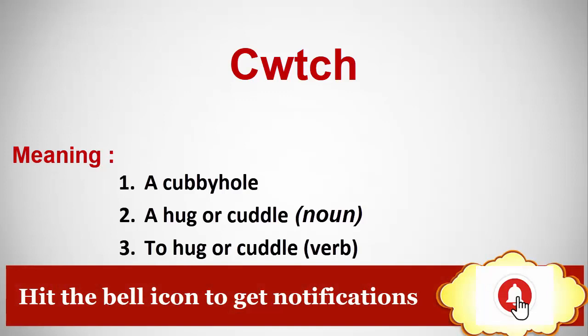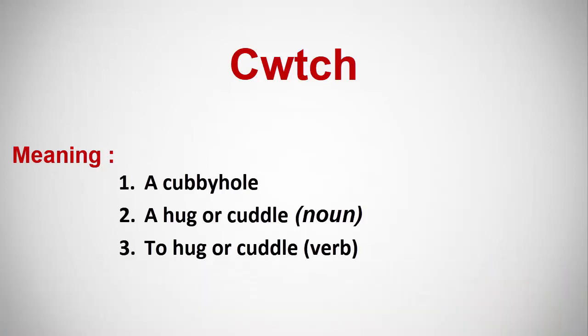Jab hum is ko ek hug aur cuddle ke meaning mein istamal karte hain to yeh ek noun ya verb dono tarah se istamal ho sakta hai. Lekin mein pehle is ka pehla matlab — a kabhi hol — explain karti hoon. A kabhi hol ka matlab yeh hota hai ke ghar ke andar koi ek choti si jagah hoti hai, small si koi corner hoti hai ya chota sa koi room ho jahan par chezon ko store karne ke liye us jagah ko istamal kiya jaye.